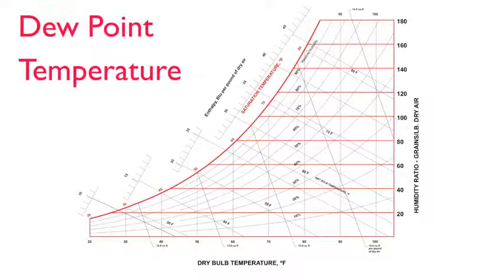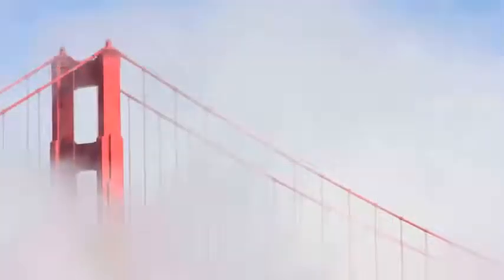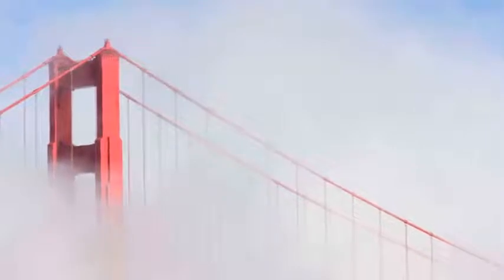Air that is fully saturated with moisture has reached its dew point. This saturation or dew point temperature is indicated by the intersection of the dry bulb temperature and the far left curved line. Fog is the real-world representation of saturated air.